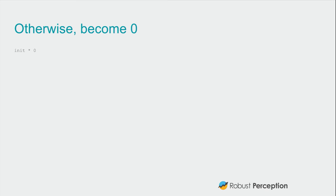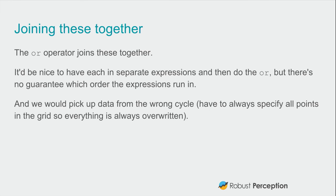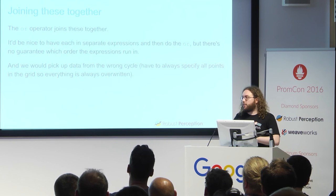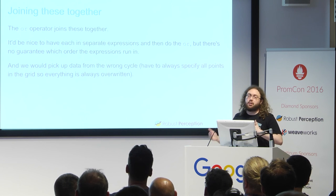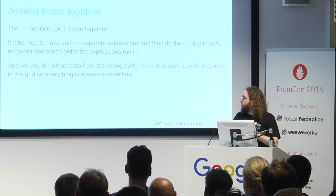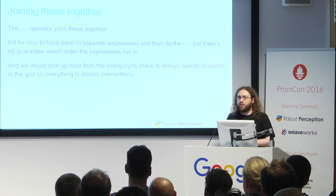The final rule is a bit trivial: otherwise you are zero. Now we want to join these together, and the OR operator is basically your outer left join. It would be nice to have separate expressions and then OR them together, but due to the fact that all the expressions putting them back into the system on each cycle are done simultaneously with no ordering, that doesn't work. So we have to do a little bit of beta reduction.